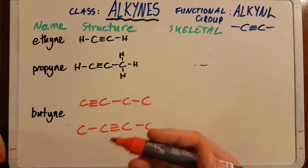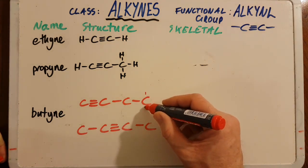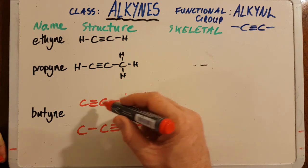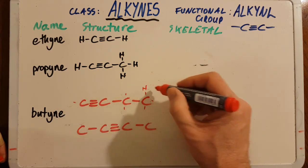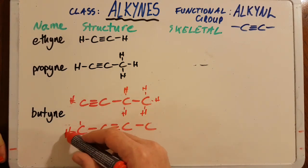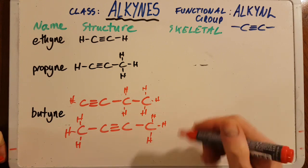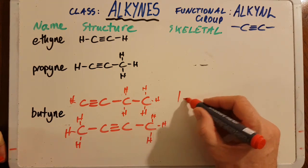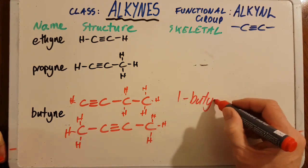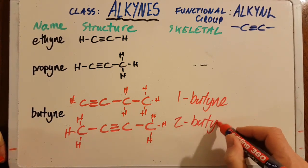A common problem is that you get over enthusiastic and you add more hydrogens than are actually needed. Every carbon has got to have four bonds. So this one was 1-butyne and this one was 2-butyne.